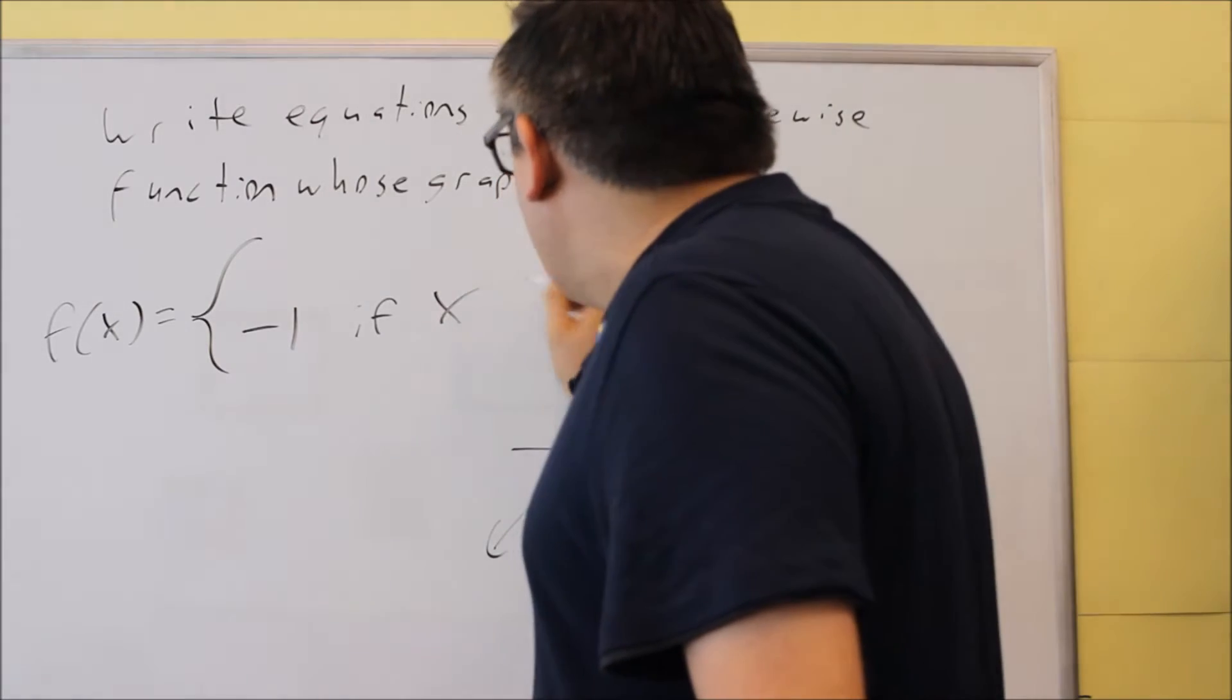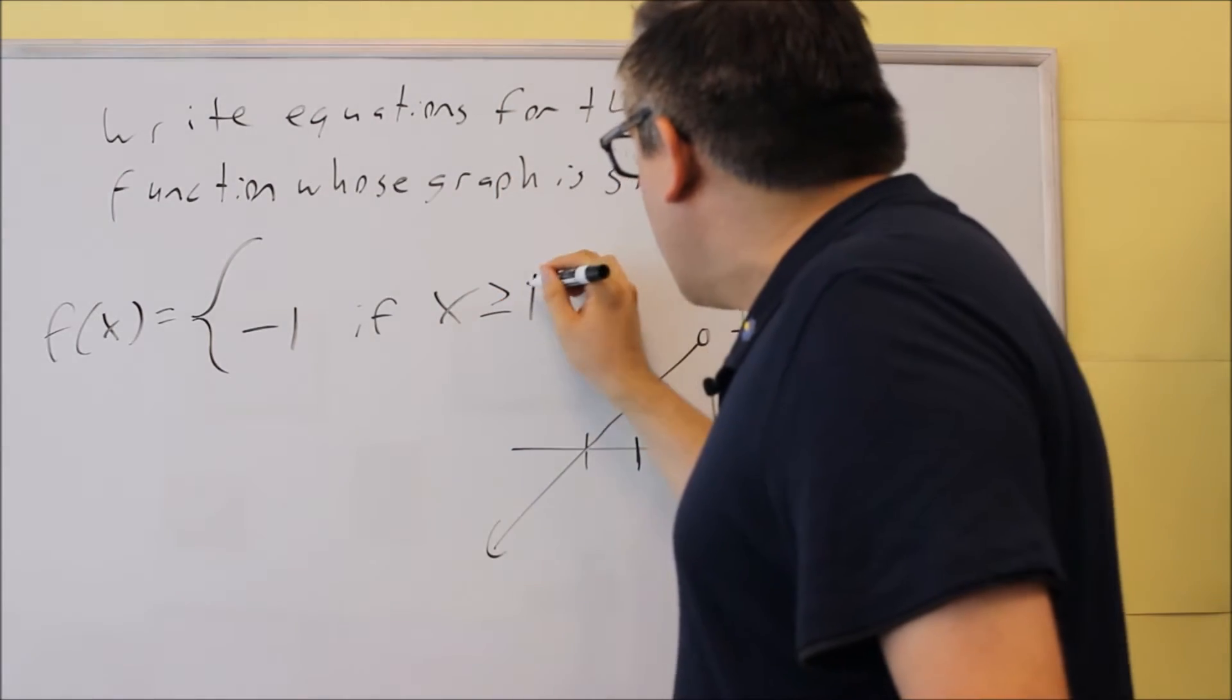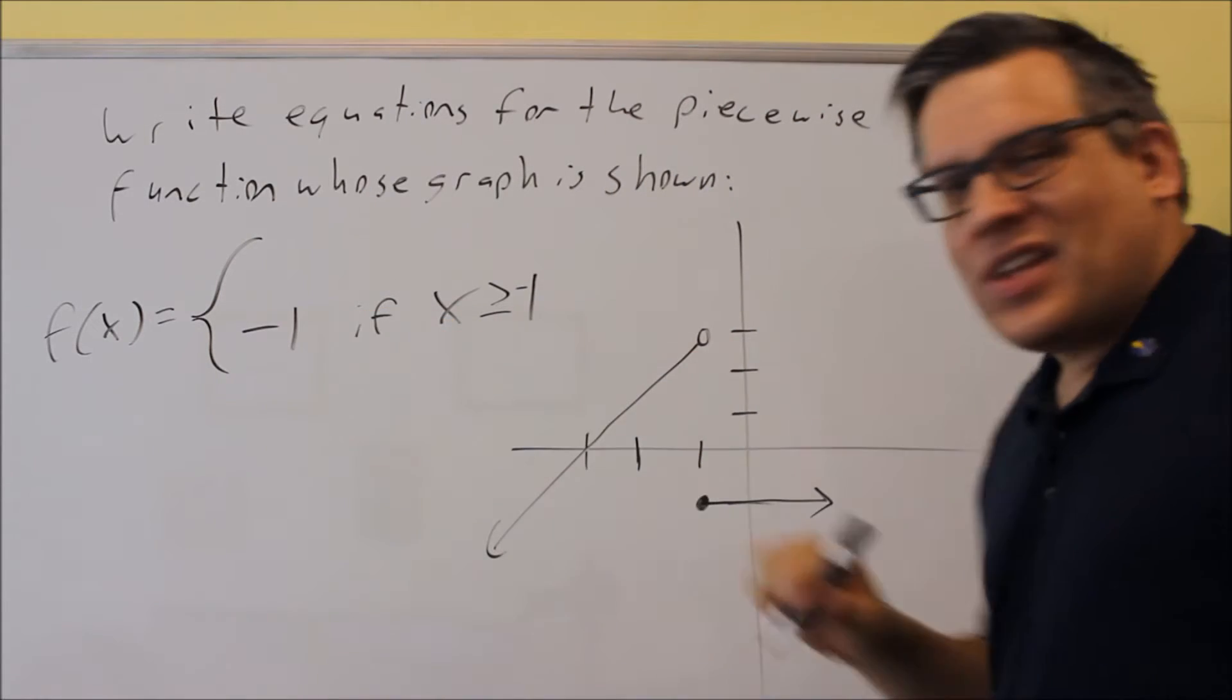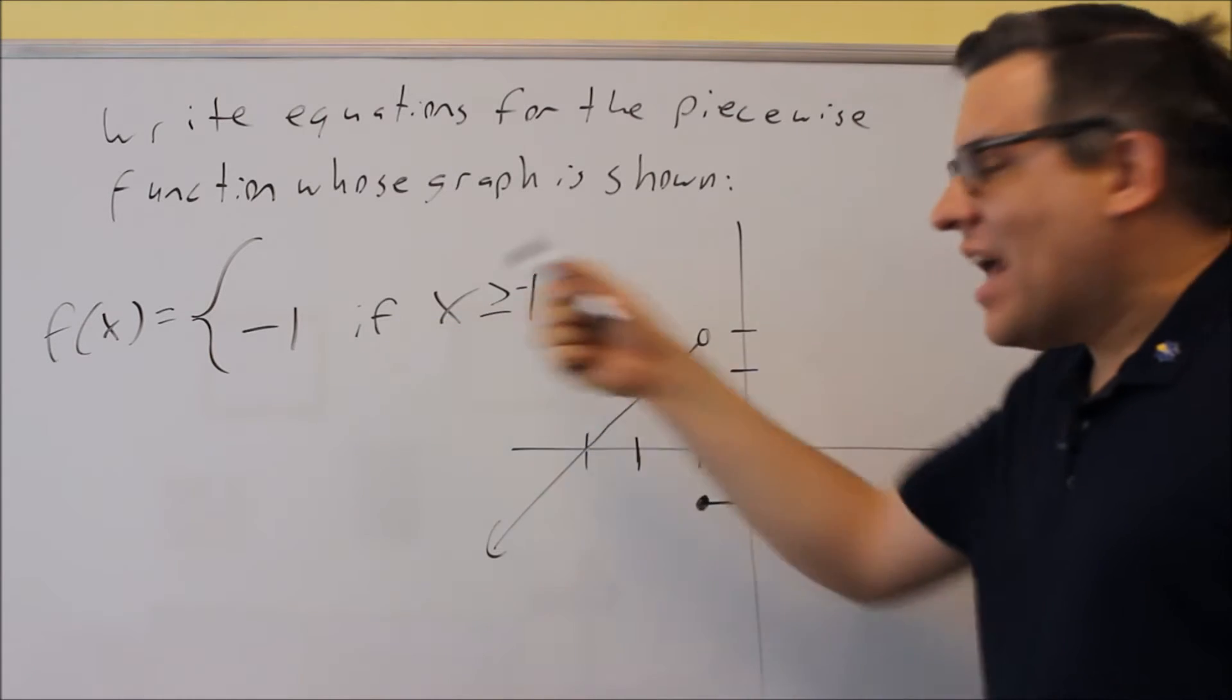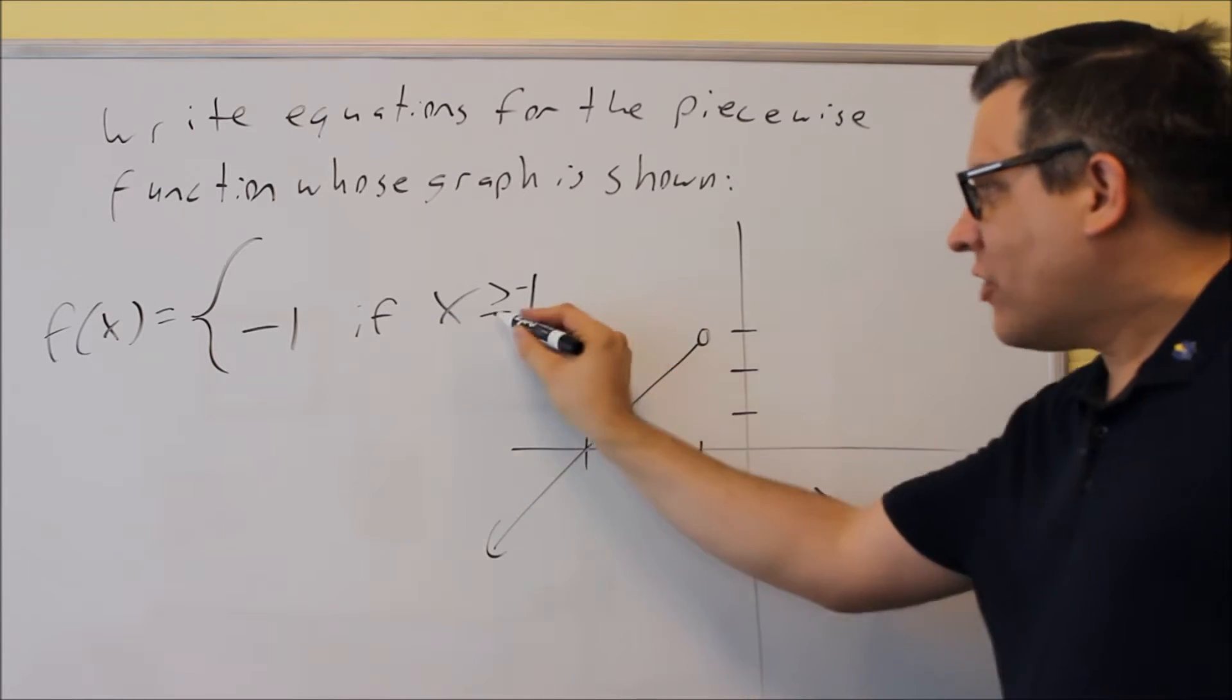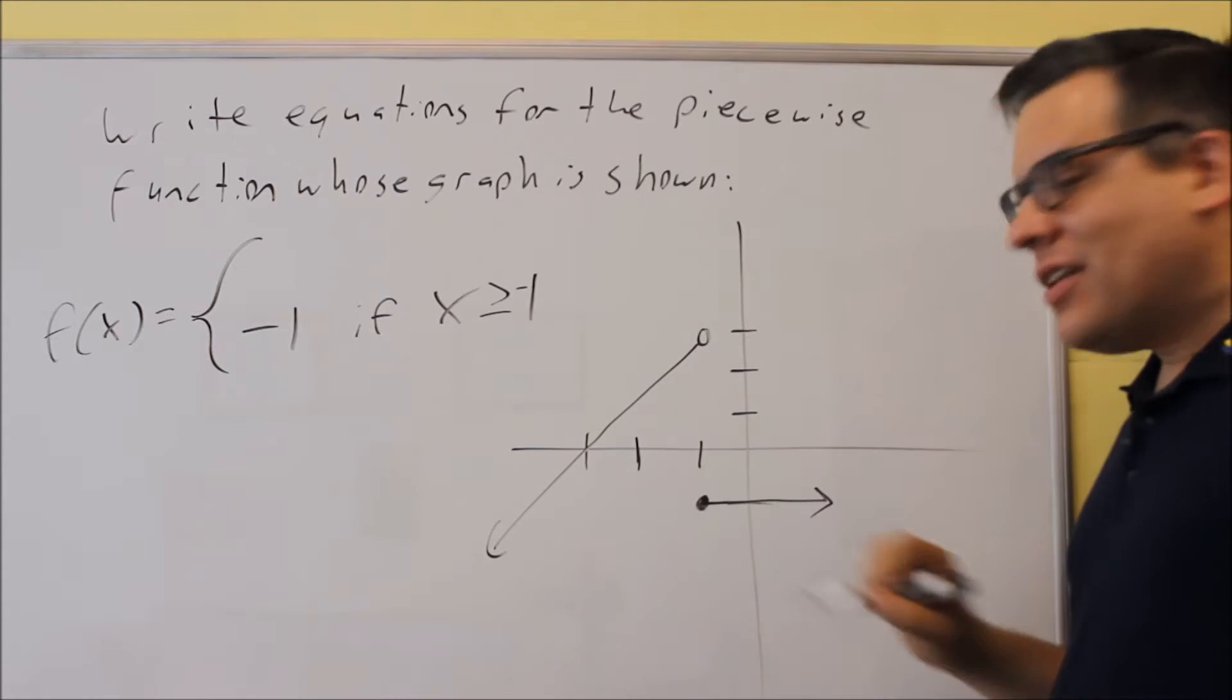So if x is, now there's a closed circle there, so a closed circle means that we're going to include that. So the y value is negative 1. Again, if the x value is greater than or equal to negative 1, we have the equal sign because this is a closed circle, and that takes care of this piece.